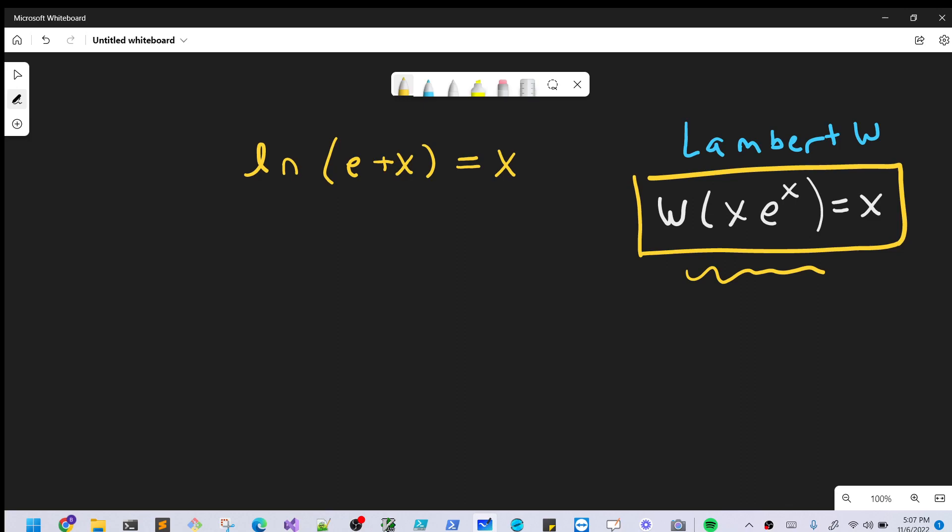But we're pretty far off right now, but what I can do is I can raise each side as the exponent on an e. So we'll say e^ln(e+x) on the left, and we'll do the right side is e^x, just making both sides the exponent.